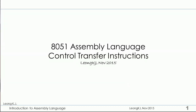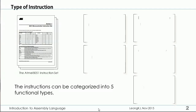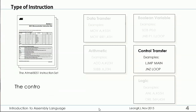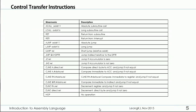8051 Assembly Language Control Transfer Instructions. Instructions can be categorized into 5 functional types. We will focus on the Control Transfer Instructions, which provide jump, conditional jump, loop, and call and return operations to control program flow. The table shows the Control Transfer Instructions, subdivided into unconditional jump and conditional jump.